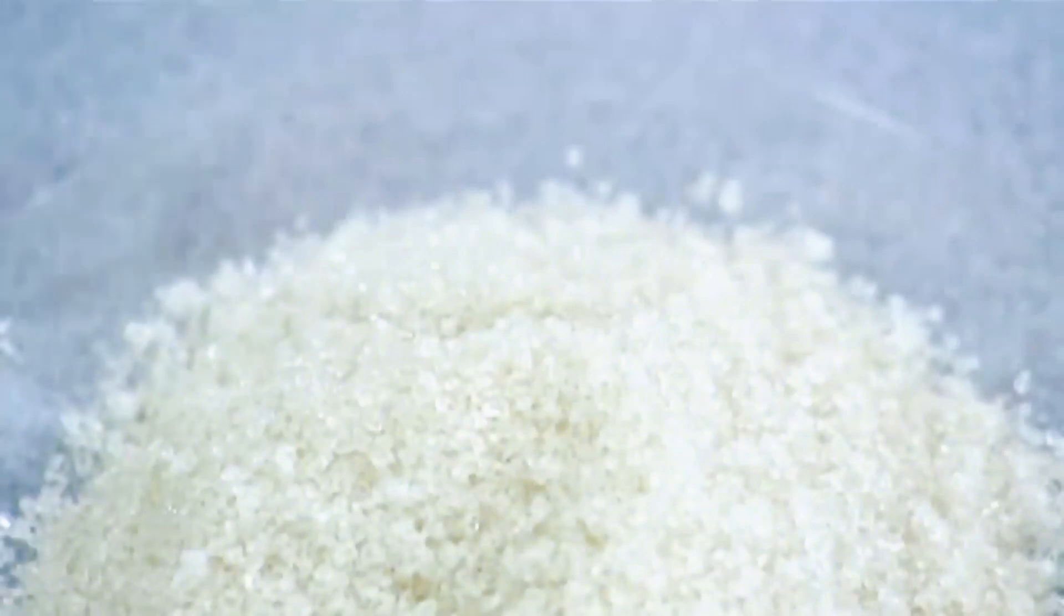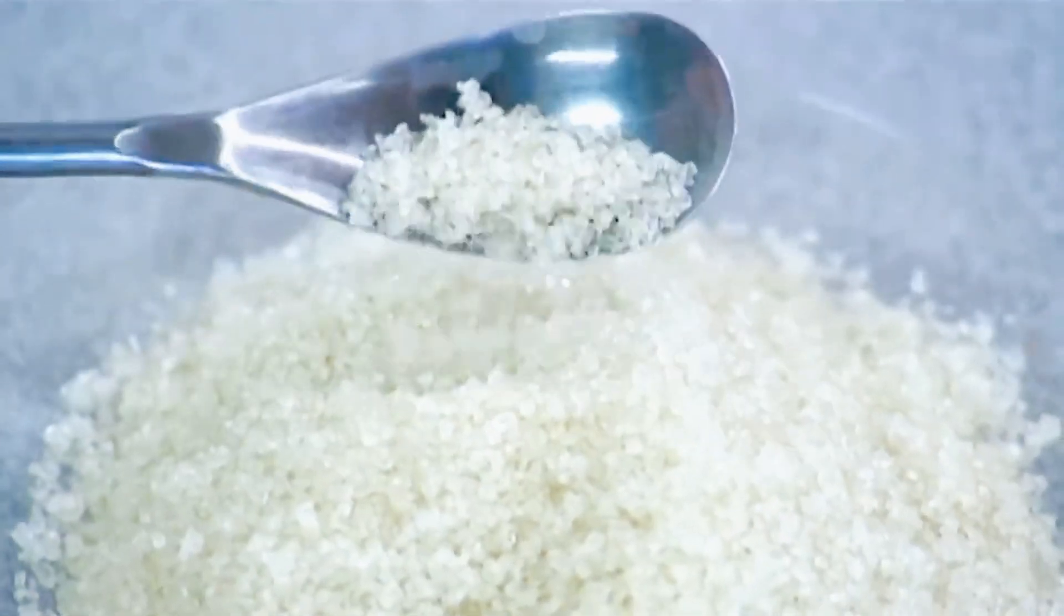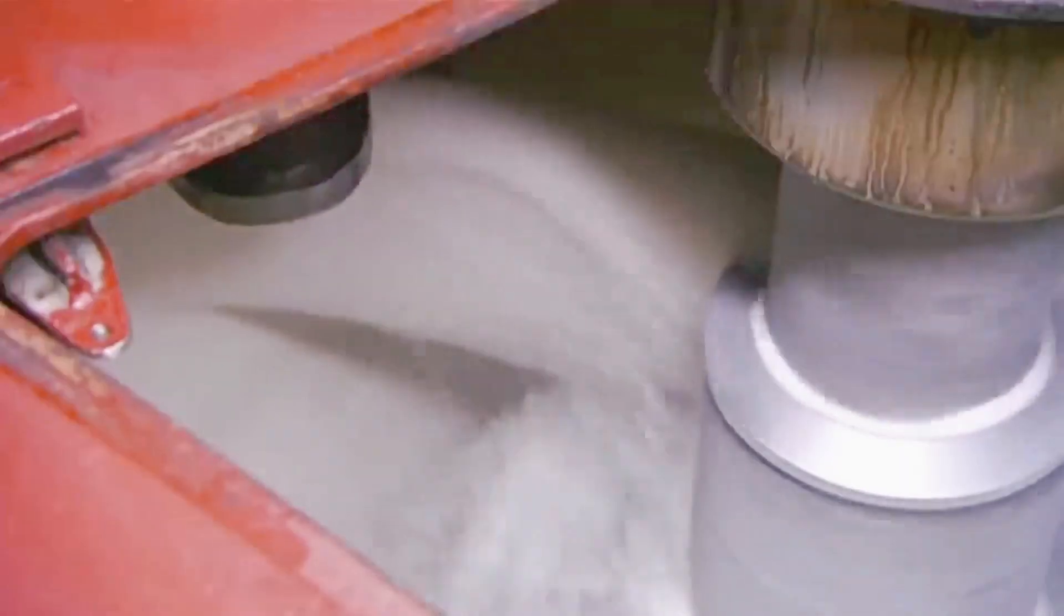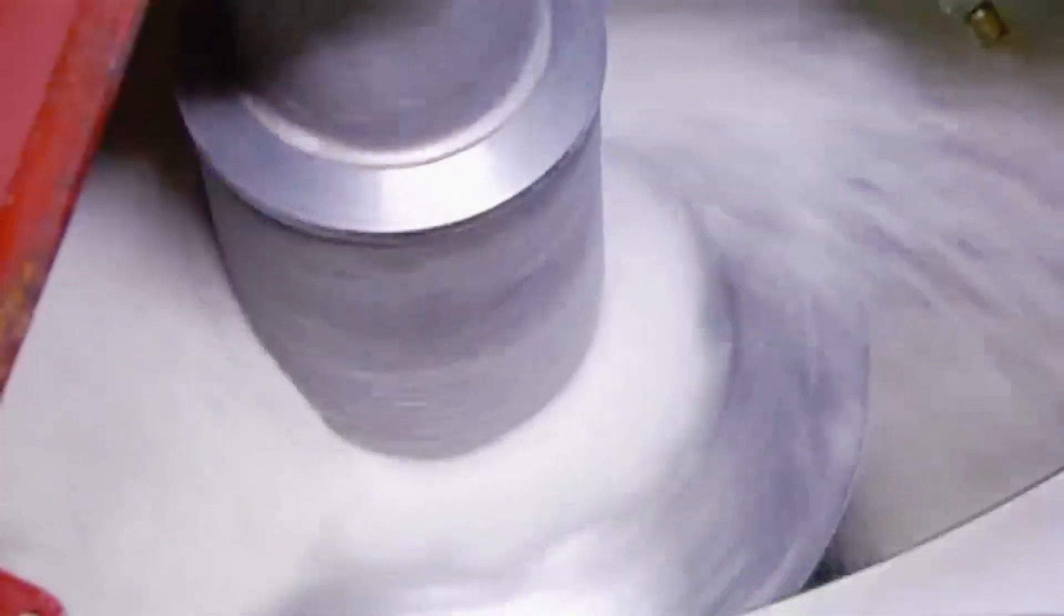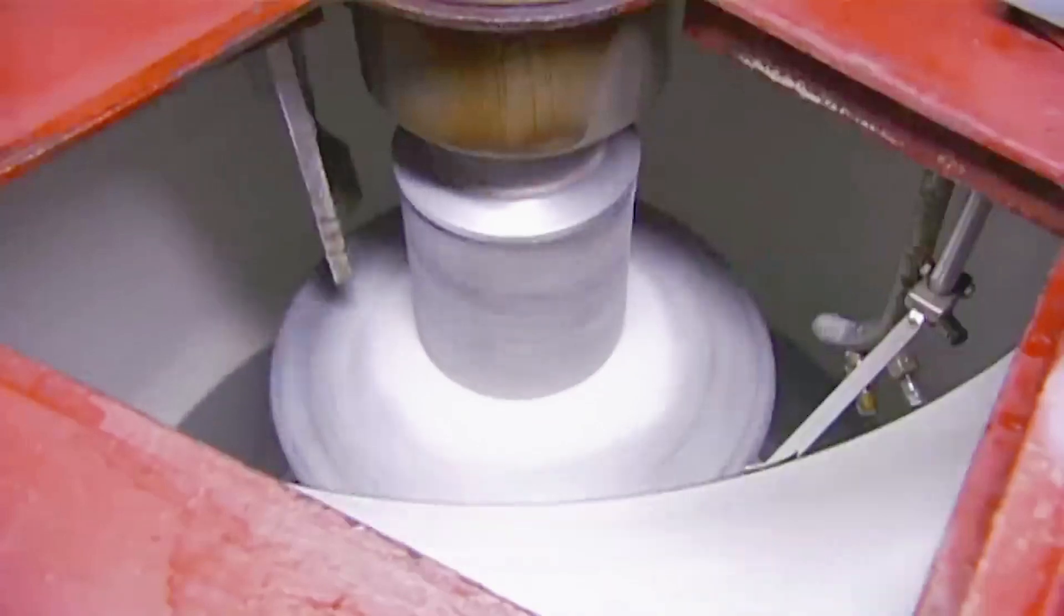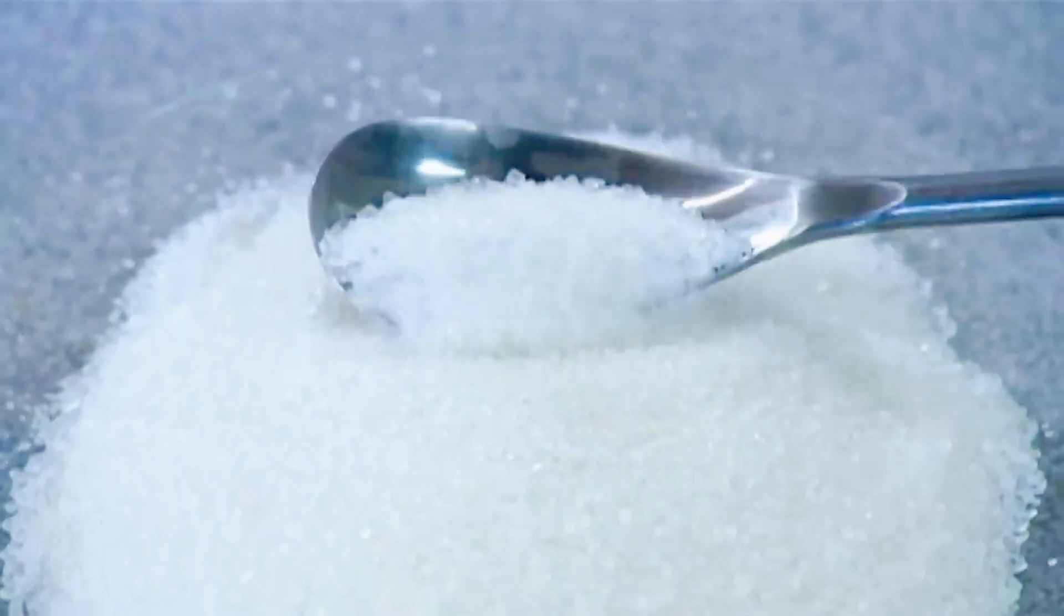Now that we have raw sugar, it still needs some final touches before it's ready to be packaged and shipped. The raw sugar undergoes a final purification and refining process. The raw sugar is dissolved back into water and the solution is filtered again. This step ensures that any remaining impurities are removed. Once the solution is clear, the sugar is re-crystallized. This is done by slowly evaporating the water to form pure sugar crystals.